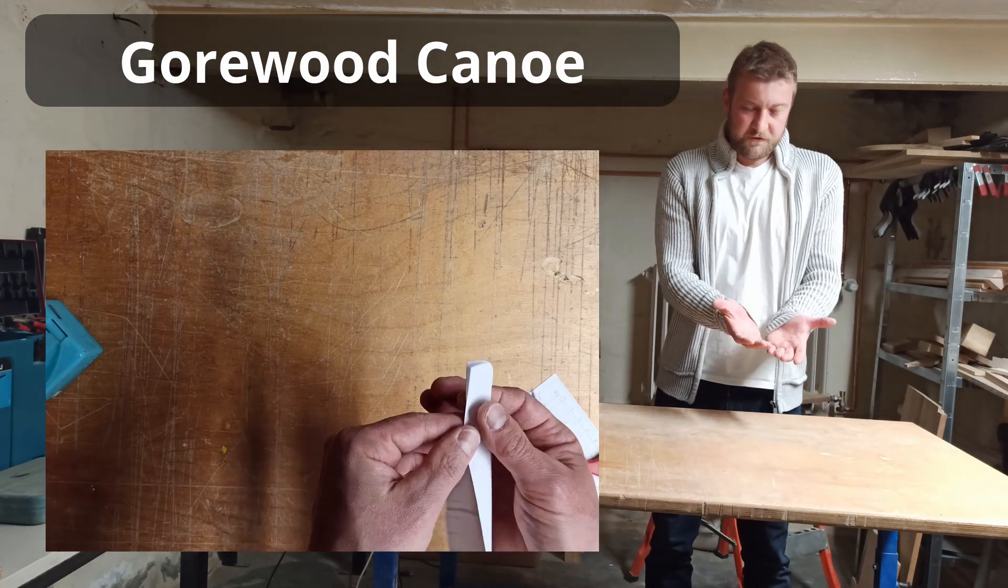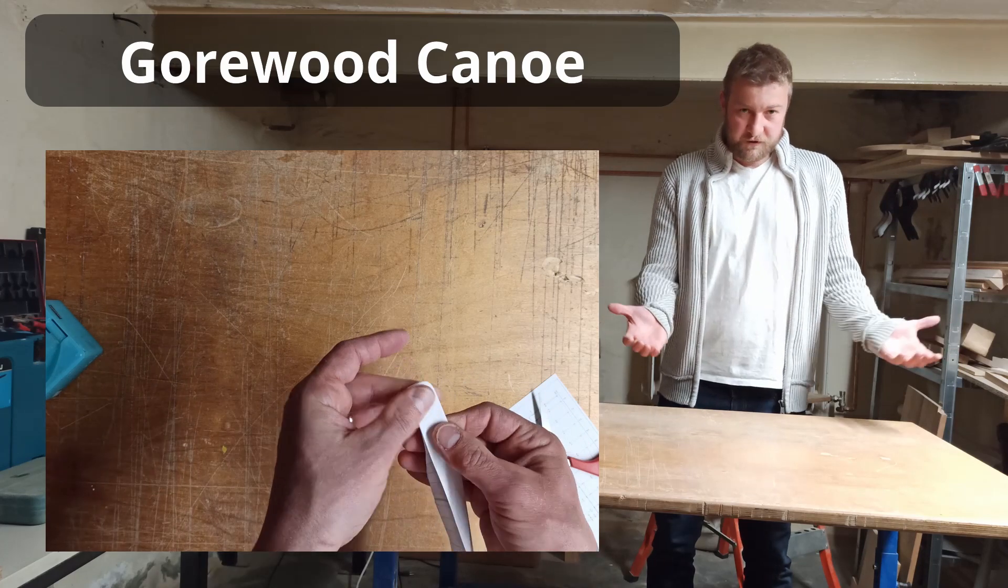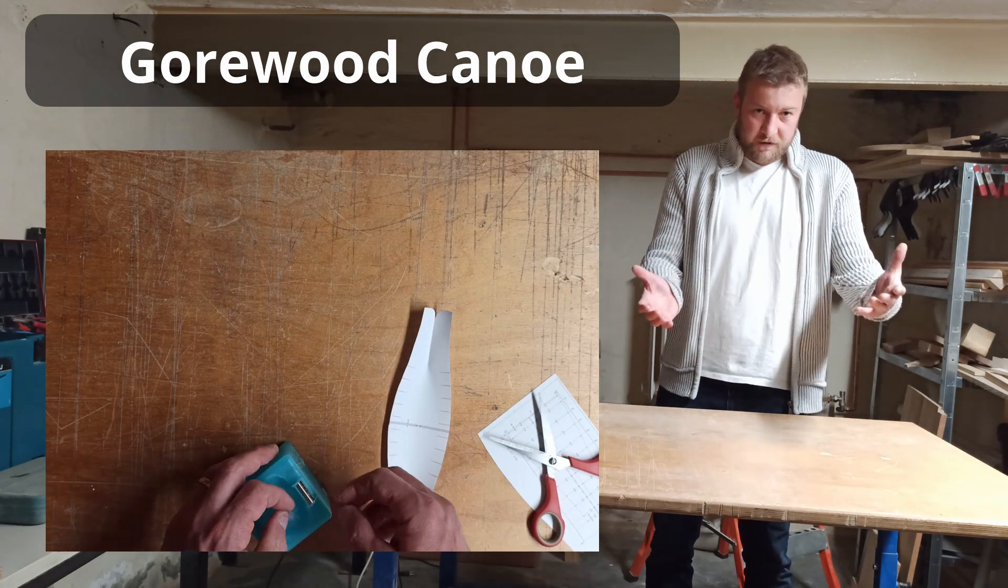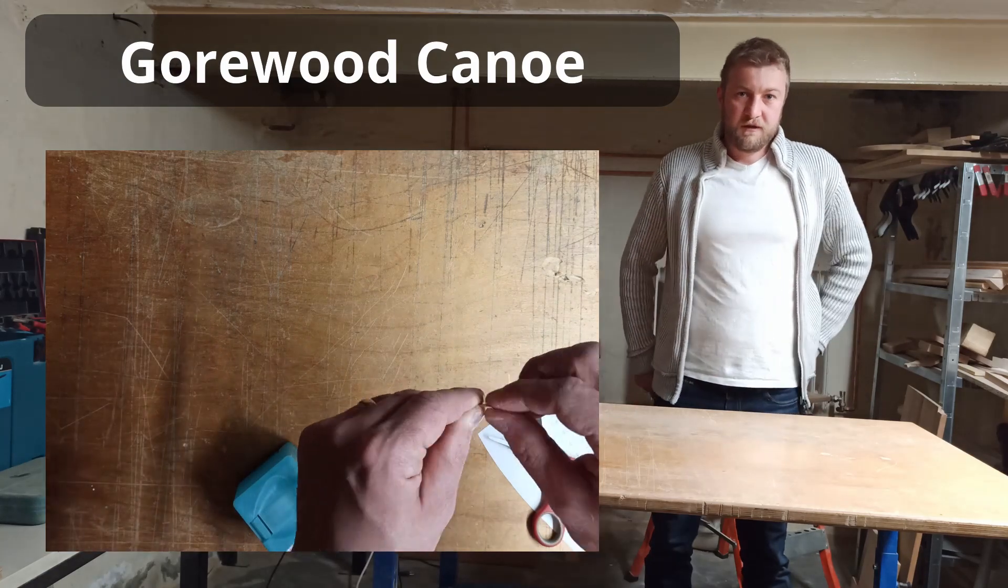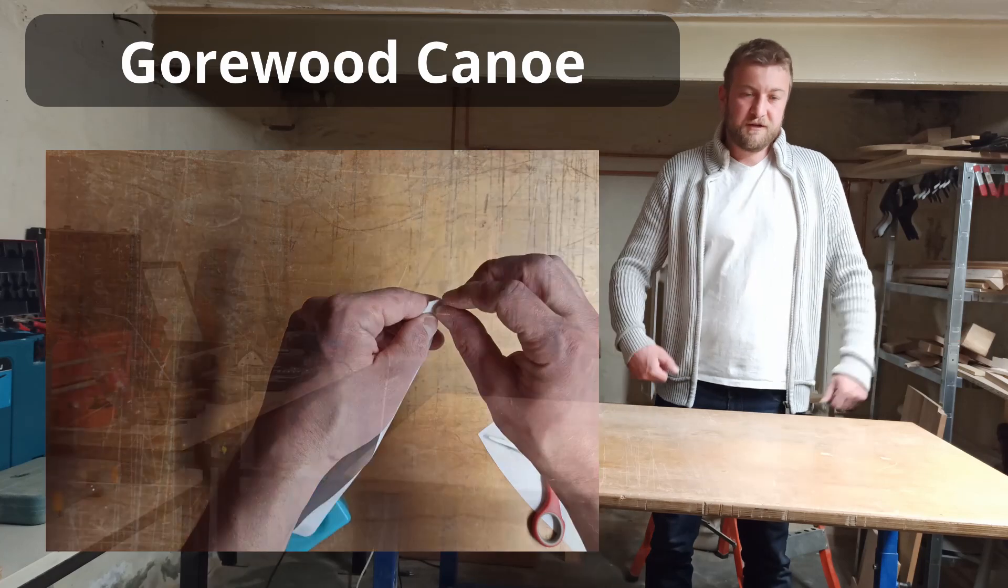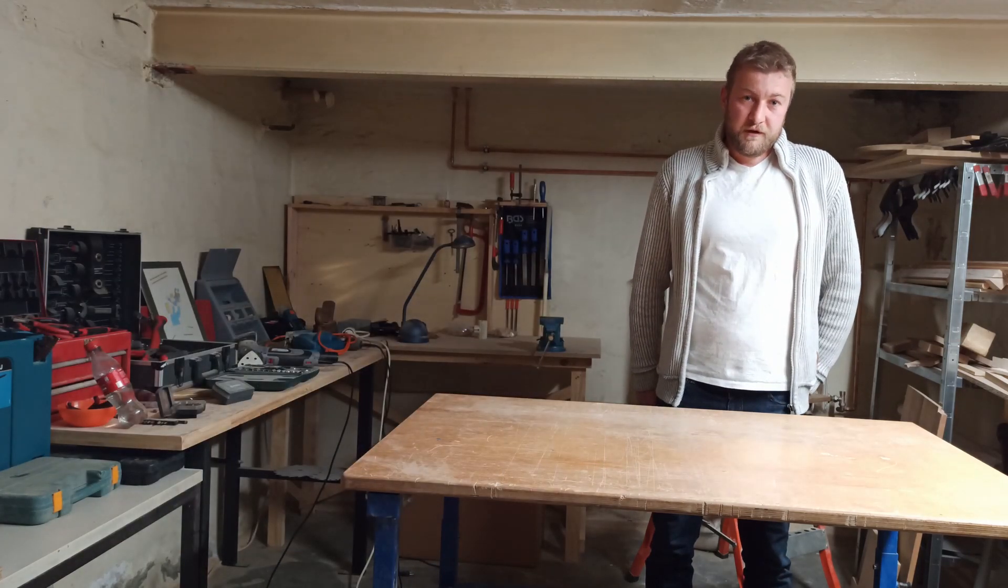The third way that I found is the gore wood canoe where you have two sheets of plywood that are connected and then bent until the whole middle area is round and the edges are glued.